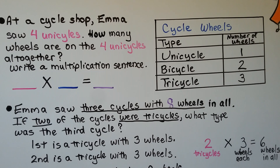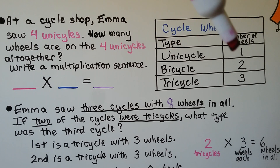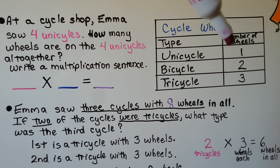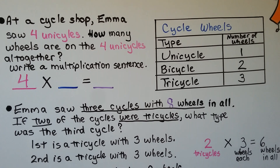At a cycle shop, Emma saw 4 unicycles. How many wheels are on 4 unicycles altogether? We have a frequency table showing cycle wheels: a unicycle has 1 wheel, a bicycle has 2 wheels, and a tricycle has 3 wheels. If she saw 4 unicycles that each had 1 wheel, we write 4 times 1 is equal to 4. The identity property of multiplication says when we multiply a factor by 1, that factor will keep its identity, so the 4 stays the same.